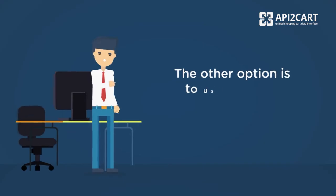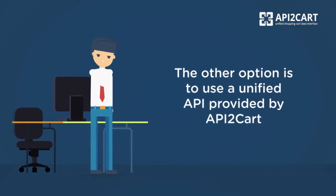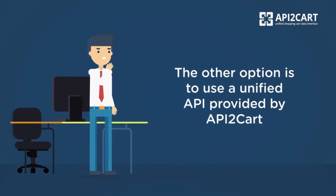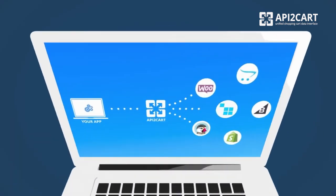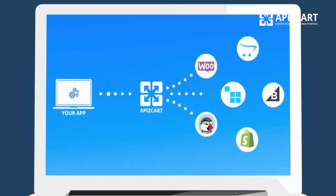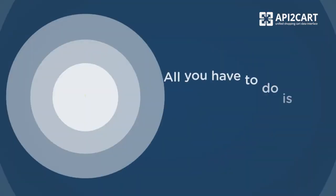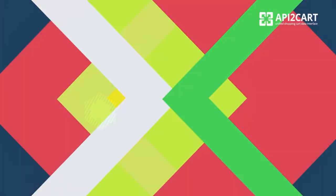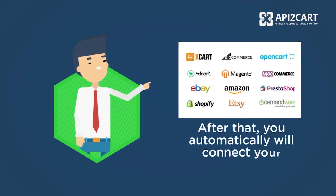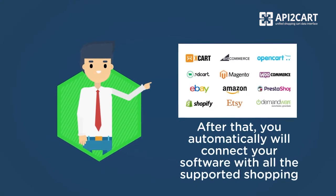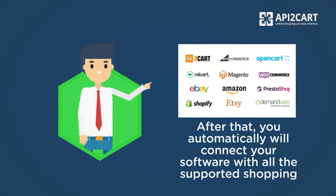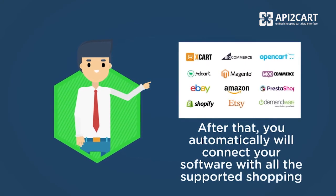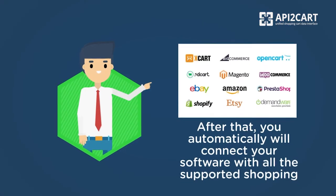The other option is to use a unified API provided by API2CART. Using API2CART, you can easily connect your software with more than 40 e-commerce platforms at once. All you have to do is integrate your system with API2CART. After that, your software will be automatically connected to Magento, Shopify, WooCommerce, PrestaShop, and the other shopping platforms.